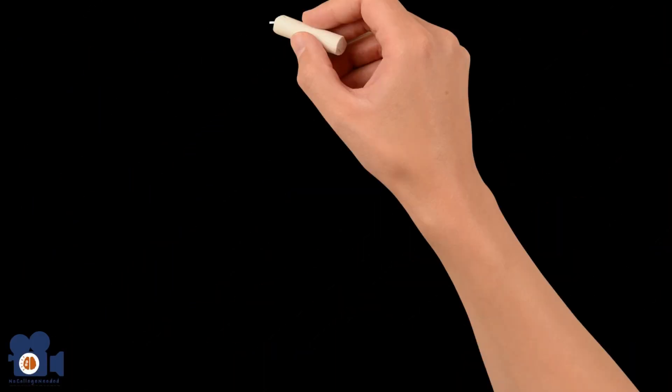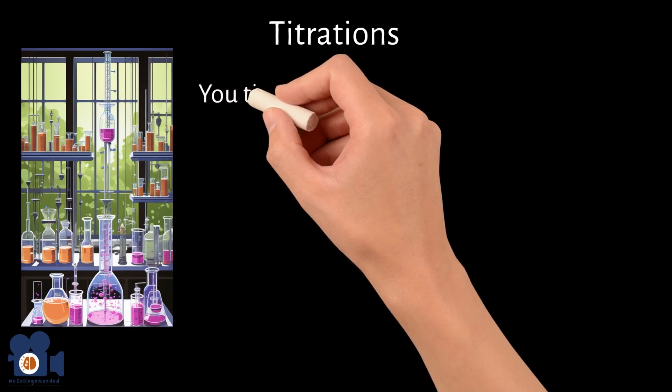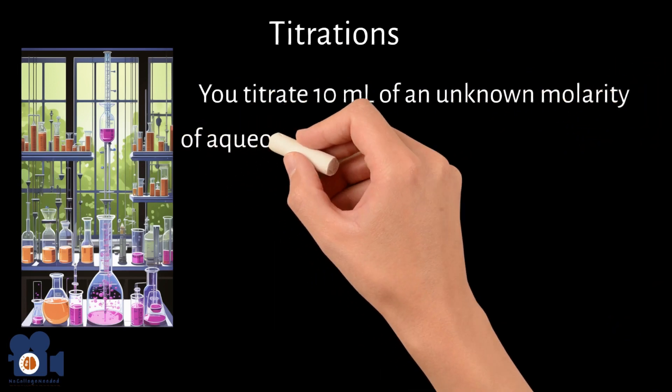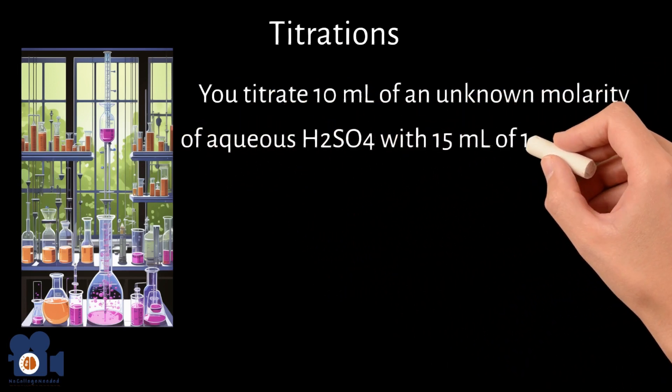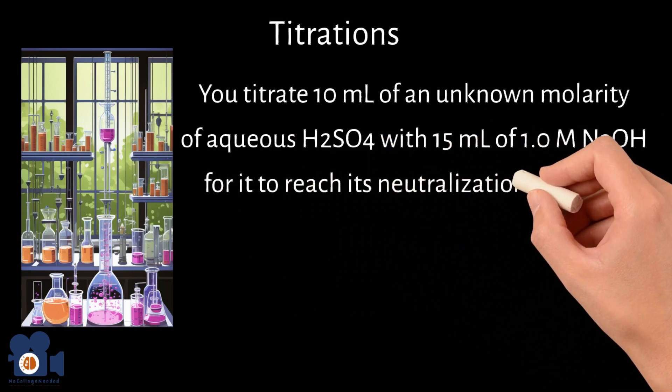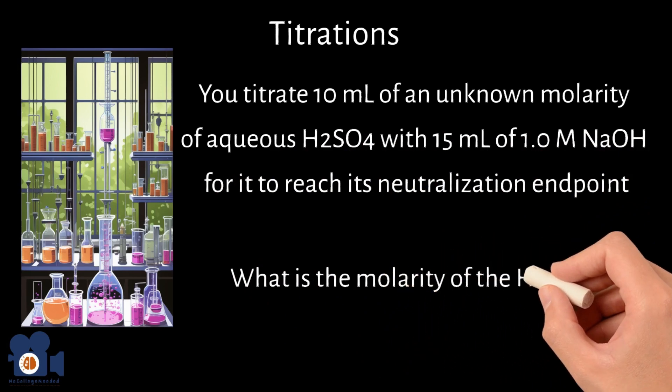Unit 4.6 explains titrations and how to calculate concentrations of an unknown solution. For this, let's say you titrate 10 milliliters of an unknown molarity of aqueous H2SO4 with 15 milliliters of 1 molar NaOH for it to reach its neutralization endpoint. What is the molarity of H2SO4?